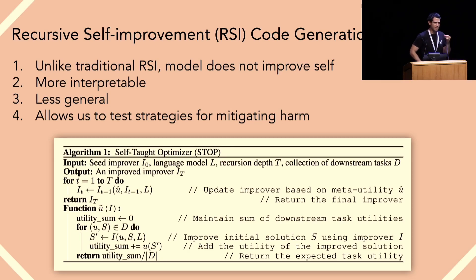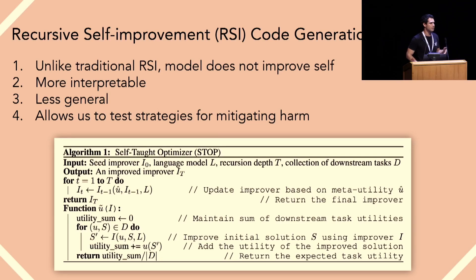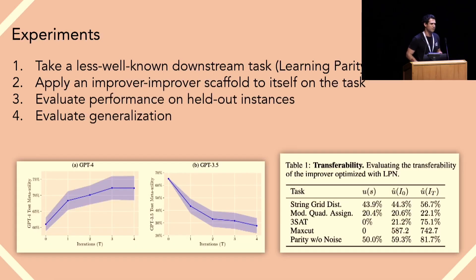There are a few important points being made. First, the model doesn't actually improve itself in any sense in this paper. Instead, you're literally just optimizing the scaffolding that is used to improve code to improve code better. It's much less general, but it allows us to potentially test strategies for mitigating harm from the recursive self-improvement strategies that might be adopted by models.